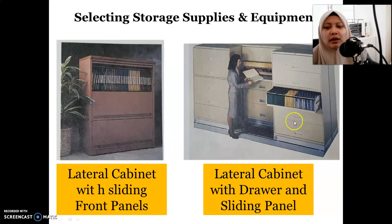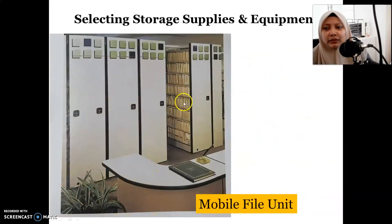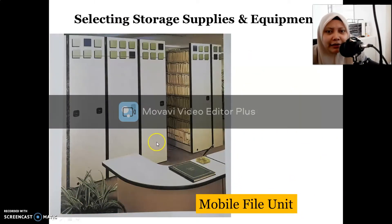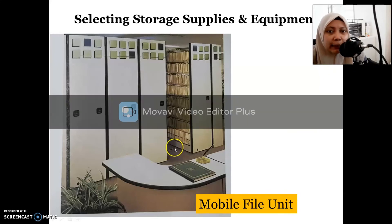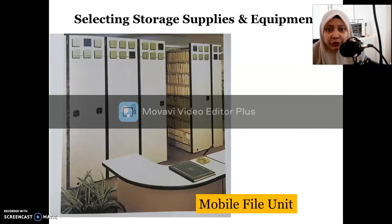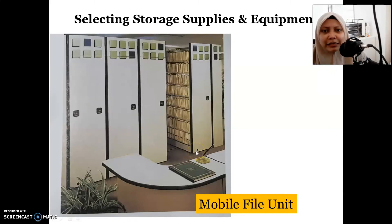Still on the lateral cabinet — this example has a slide front panel, and this one has a drawer and slide panel. This is a mobile file unit. It looks similar to a traditional open-shelf cabinet, but it has a railway system with no space in between. When you want to access one side, you click a button and it opens; the railway helps the rack or open shelf move from one part to another.